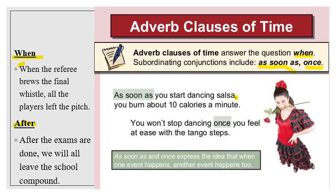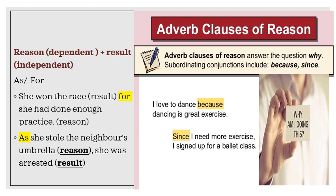The next type is adverbial clauses of reason. As you can tell from the name, they answer the question 'why.' The common subordinating conjunctions are: because, since, as, and for. For example: 'I love to dance because dancing is a great exercise.' 'I love to dance' is the independent clause. 'Because dancing is a great exercise' is the dependent clause.